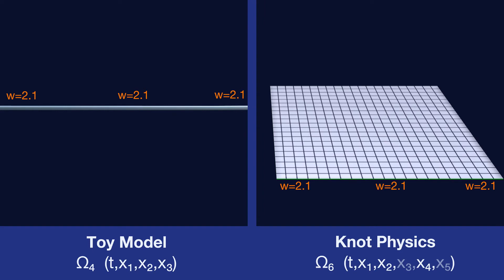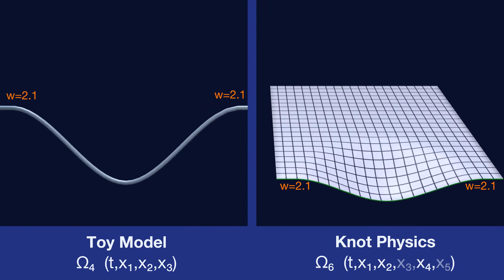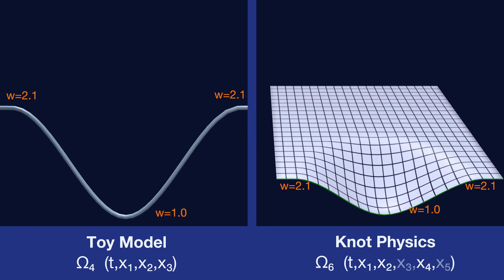If the total amount of branch weight is conserved and the manifold increases in volume, the value of the branch weight at any particular point must go down.